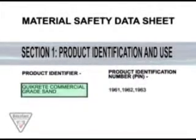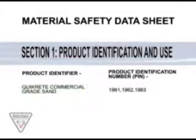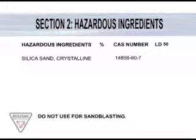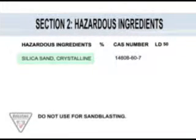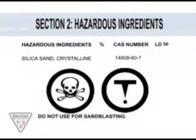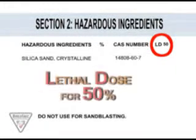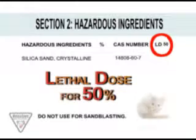Section 1 contains information on the product's name and what it is used for. Section 2 will list the hazardous ingredients and information to interpret how toxic they may be to humans, such as the term LD50, which represents the dose it took to be lethal on 50% of the test animals the ingredients were tested on.